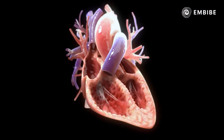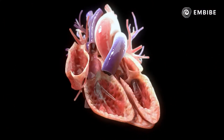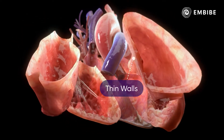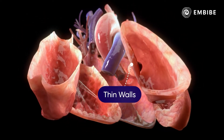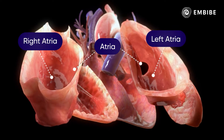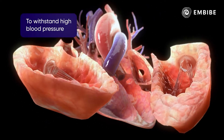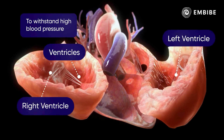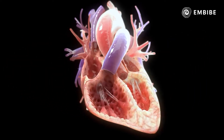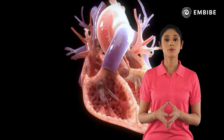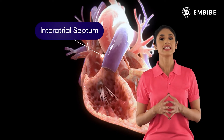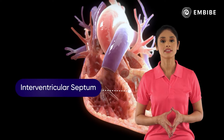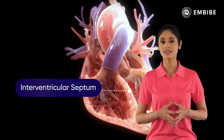If we observe the internal view of the heart, we see that the heart has four chambers: two upper thin-walled atria and two lower thick-walled ventricles. The two atria are separated by the inter-atrial septum, and the ventricles are separated by the inter-ventricular septum.